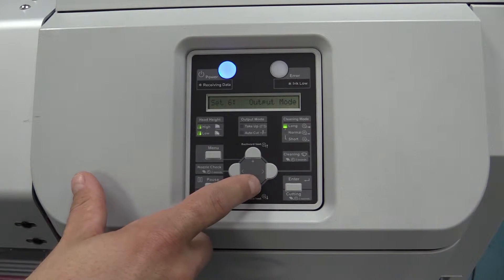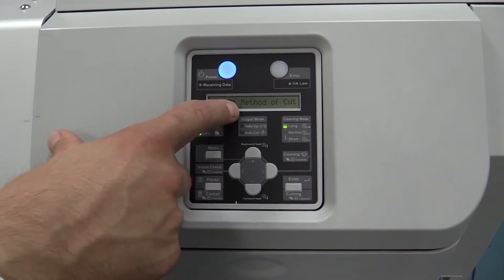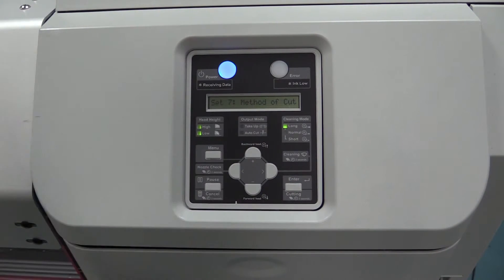Setting 6 you can skip. Setting 7 you can also skip because this deals with the cross-cut function, which we're not going to use due to the thickness of the material.